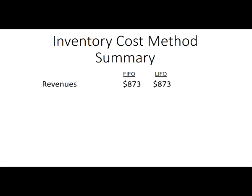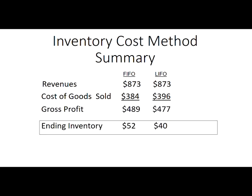Looking back at all the calculations for FIFO, LIFO, and weighted average, here's a summary: revenues based on sales of $873; cost of goods sold is $384 for FIFO, $396 for LIFO, and so on. One thing to note: in our transactions, prices rose from $10 to $12 to $13 per unit. That's indicative of what happens in the American economy — prices go up all the time, which is called inflation. Most accounting problems use rising costs for this reason.